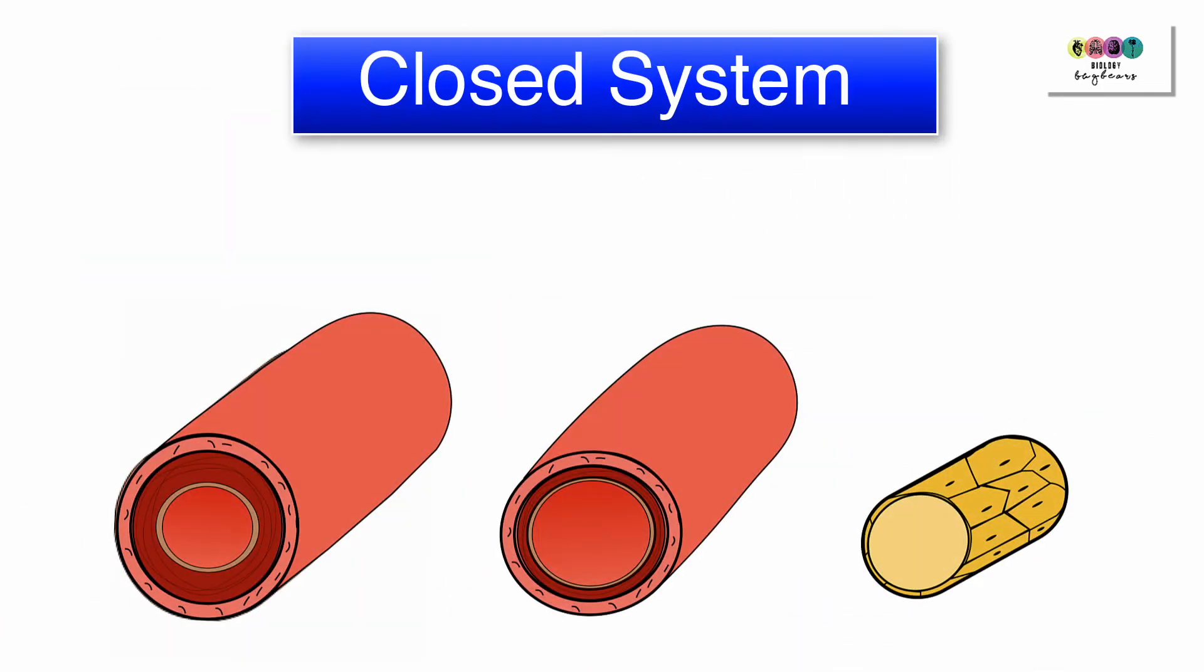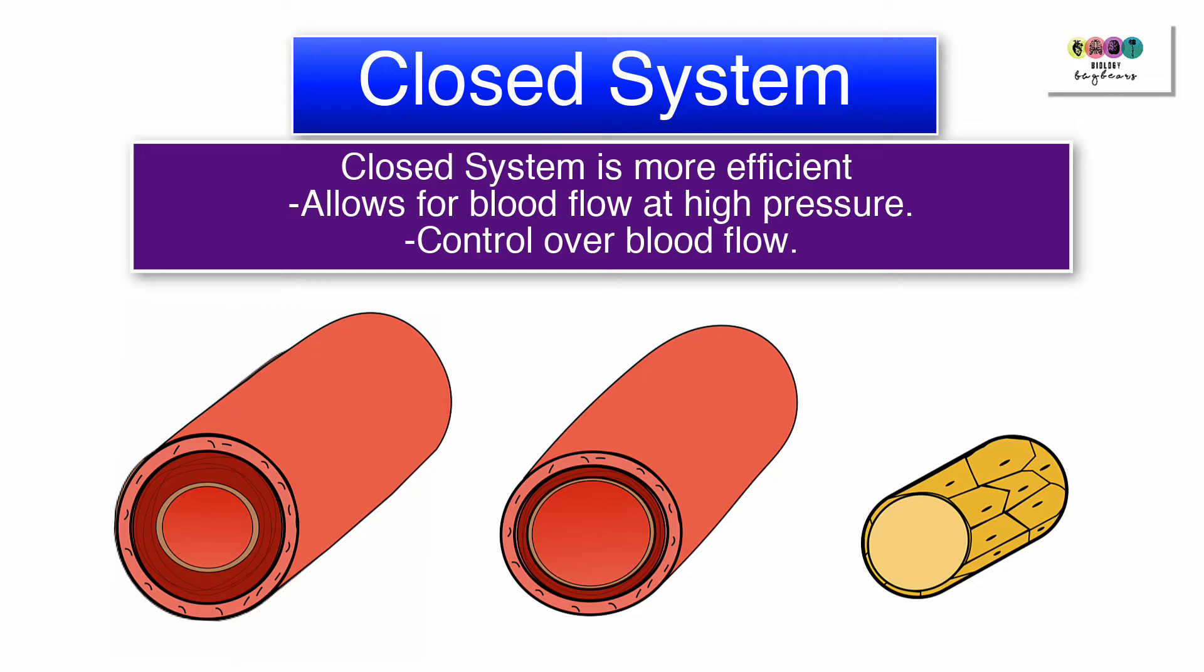A closed circulatory system offers some benefits. Firstly, it's much more efficient because the blood is flowing at high pressure, meaning nutrients can reach the cells really quickly. As well as that, blood flow can be controlled so the blood flow to particular organs can be controlled.